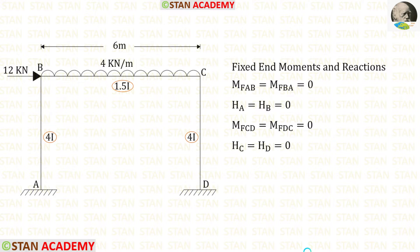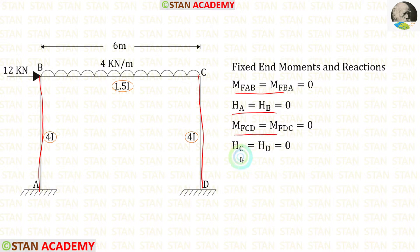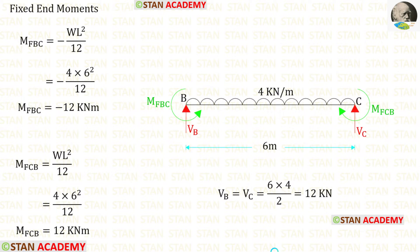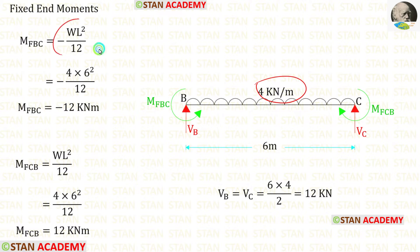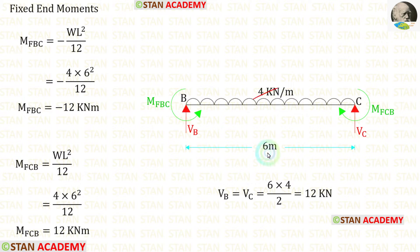Now let us find the fixed end moments and reactions. In the columns AB and CD, there is no load, so the fixed end moments and horizontal reactions will be 0. Now let us find the fixed end moments in the beam BC. We have a uniformly distributed load of 4 kN per meter acting for the full span. The formulas to find the fixed end moments are minus WL² upon 12 and positive WL² upon 12. Here W is 4 and L is 6.